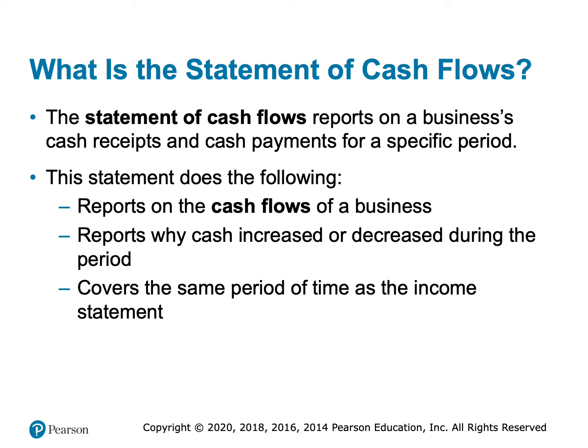The statement of cash flows is that fourth financial statement. What it does is it reports the cash receipts — what cash did we get, how much did we get, where did it come from — and how much are cash payments, how much cash did we spend, what did we spend it on, for a specific period of time. Specifically, it's going to be the same period of time as the income statement and the statement of retained earnings.